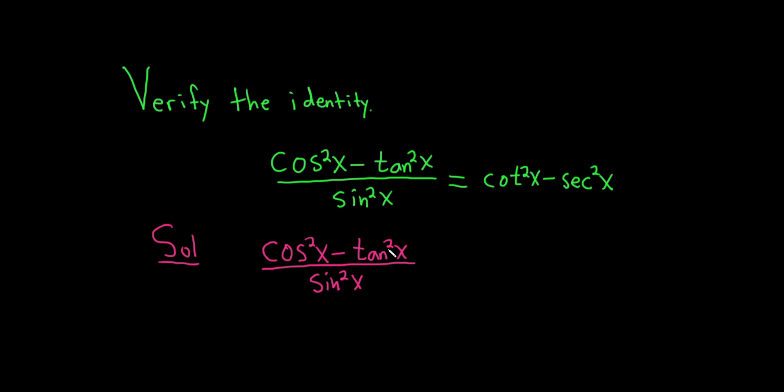And our goal is to show that this is equal to this over here. So you'll notice that we can break this up as follows. You can write this as cosine squared over sine squared. So this is cosine squared x over sine squared x, minus tan squared x over sine squared x.